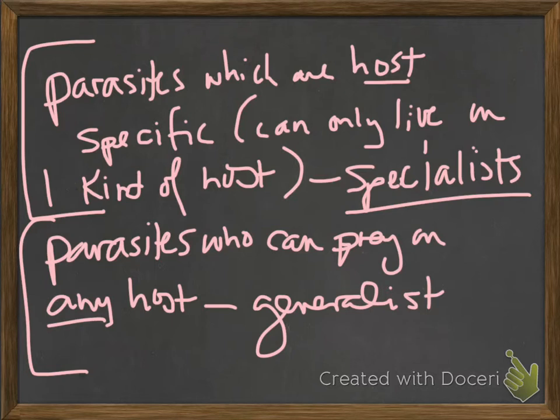Which one is at more risk of extinction? If you're a specialist and the only thing you can eat is blood from, say, blue-footed wombats — if the blue-footed wombat goes extinct, you go extinct too. So being a generalist is a really good strategy. Generalists tend to do better.